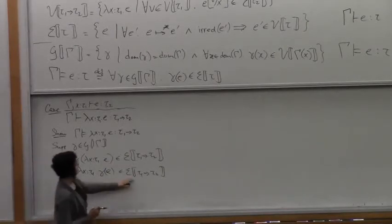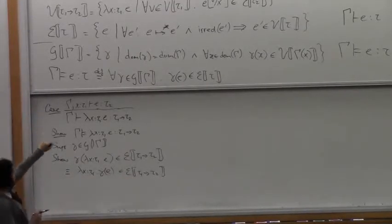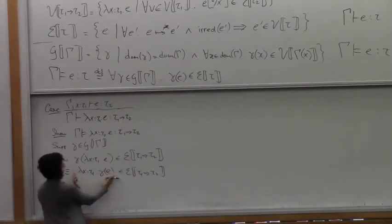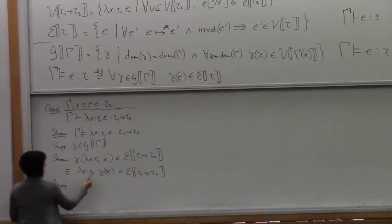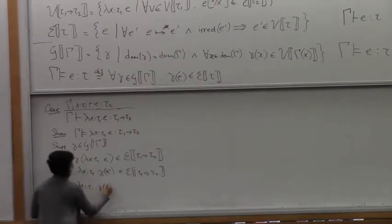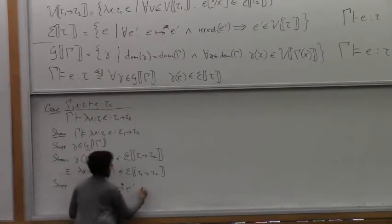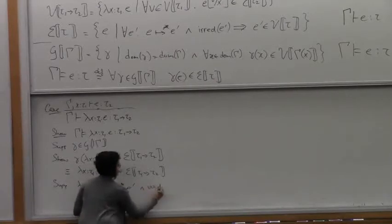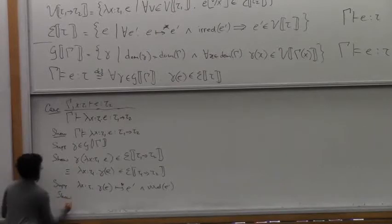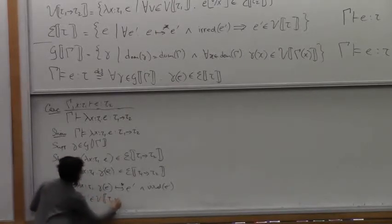So let's go see what we need to do in order to prove this. Let's look at the definition of E of tau. We have to say that suppose that this lambda steps to some E prime in some number of steps, and E prime is irreducible. And now we have to show that the E prime belongs to V of tau 1 arrow tau 2.